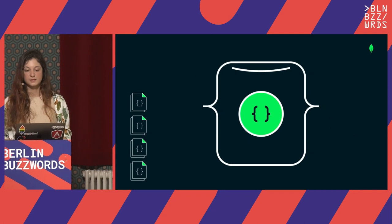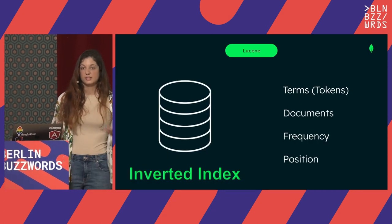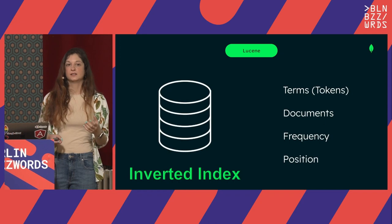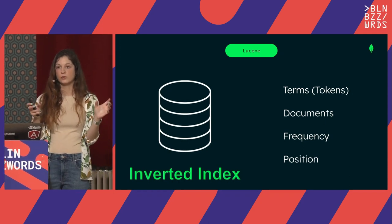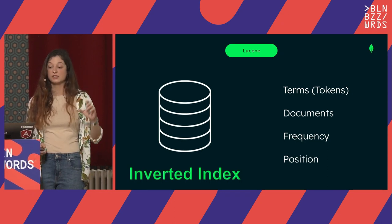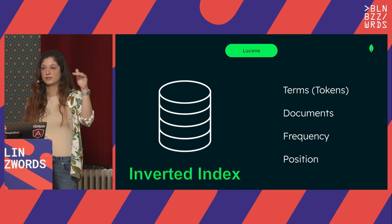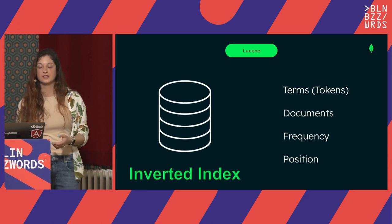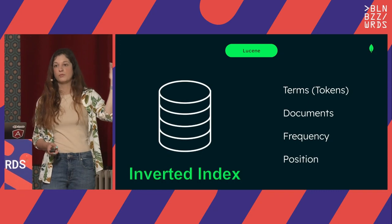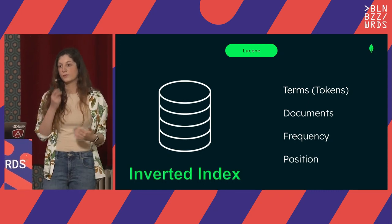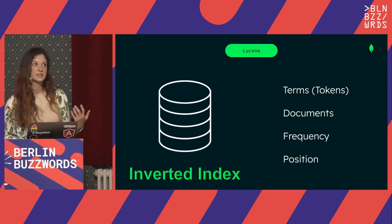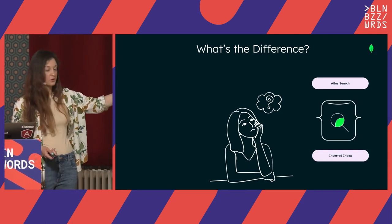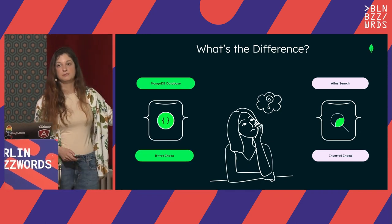What's the deal with the inverted index? The inverted index means every single token points to a document. If you break 'L.Messi' into two tokens, in the inverted index you'll have 'L.' pointing to the document for Lionel Messi, and 'Messi' pointing to the same document. Every single player that has the 'L.' token as part of their name will point to all the relevant documents. How does this inverted index compare to the MongoDB index? Atlas Search creates an inverted index, and MongoDB uses B-tree indexes.